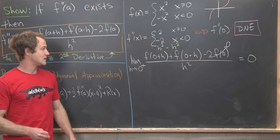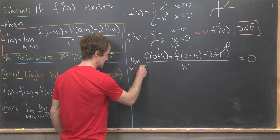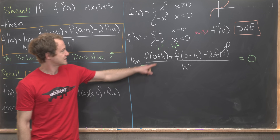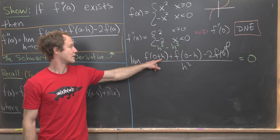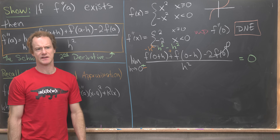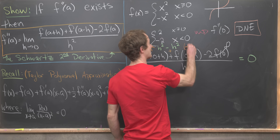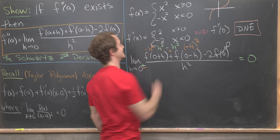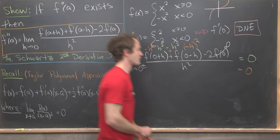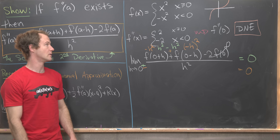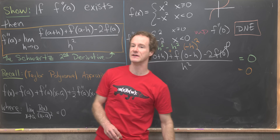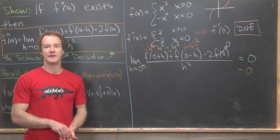For the left-handed limit — h approaching zero from the left with negative values of h — f of h gives minus h squared and f of minus h gives positive h squared (using the left branch). So minus h squared plus negative h squared also gives zero. Both one-sided limits equal zero, so this limit does exist and equals zero. This function has the property that its second derivative does not exist at zero, but its Schwartz second derivative does exist and equals zero.